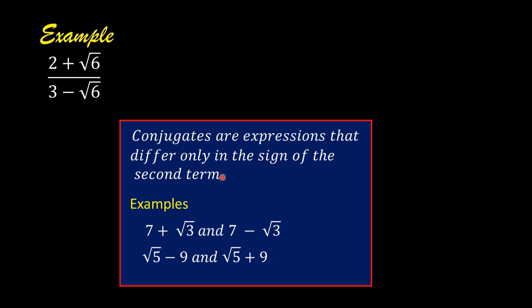Conjugates are expressions that differ only in the sign of the second term. For example, 7 plus square root of 3 and 7 minus square root of 3 are conjugates. Square root of 5 minus 9 and square root of 5 plus 9 are conjugates. To find the conjugate of a given binomial radical, we just change the sign of the second term.